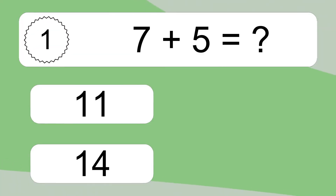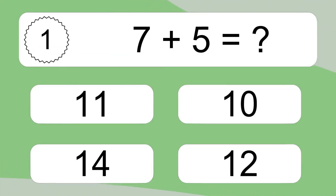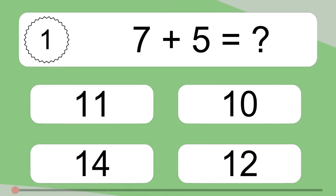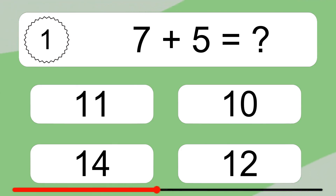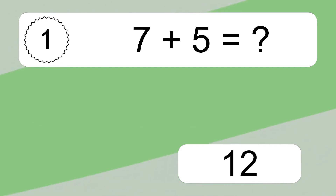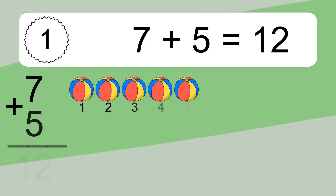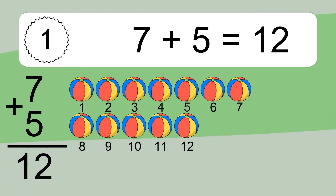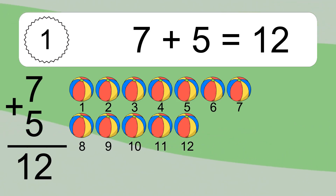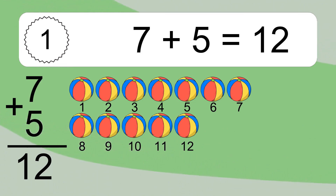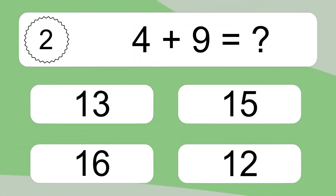7 plus 5 equals what? 7 plus 5 equals 12. Let's count it: 1, 2, 3, 4, 5, 6, 7, 8, 9, 10, 11, 12.